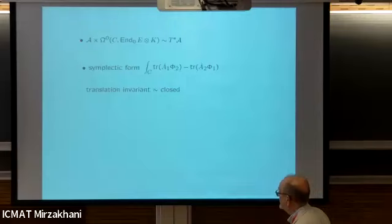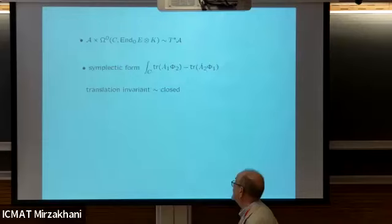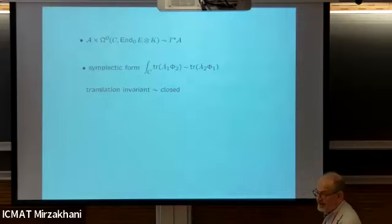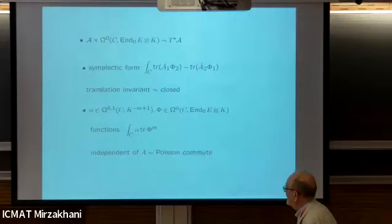On this space, the group of complex automorphisms - C-infinity complex automorphisms of the bundle - acts in a natural way, taking one D-bar operator to another. The C-infinity sections of the endomorphism bundle twisted with the canonical bundle can be understood, via the natural pairing given by taking the trace and integrating over C, as formally the cotangent bundle of this affine space. There is formally a symplectic form given by the pairing between the two dual vector spaces. This is closed because it's translation invariant.